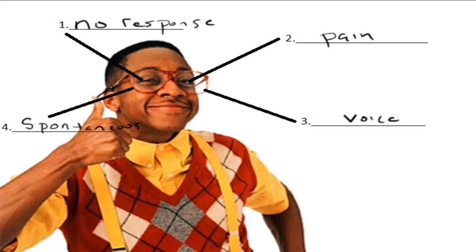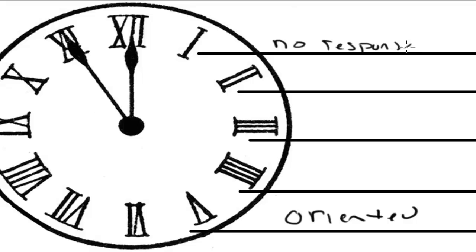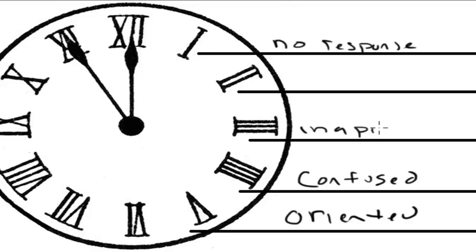Next, we would assess the verbal response. We remember that there are five points here by knowing that V is the Roman numeral five. You would get five points for being oriented, and one point for no response at all. You would get four points for being confused — if I asked you what year it is and you said 2004, you'd be confused. If you responded 'purple,' that would be inappropriate and worth three points. And if you had an unintelligible sound — moaning, groaning — that would be an incomprehensible response and worth two points.